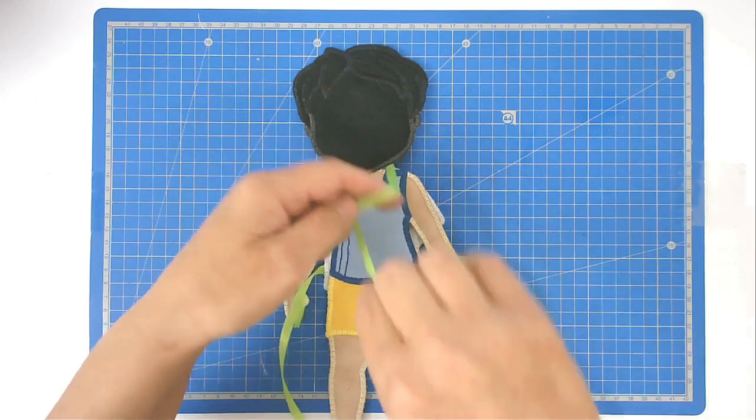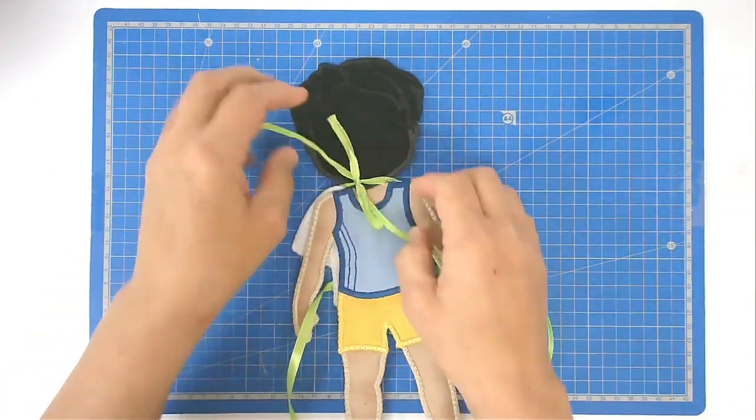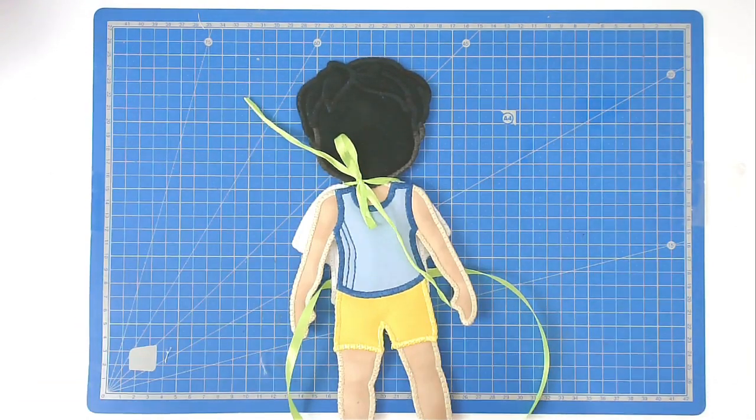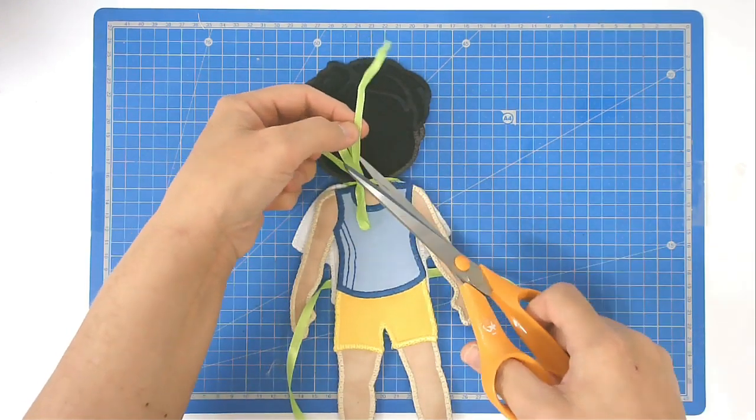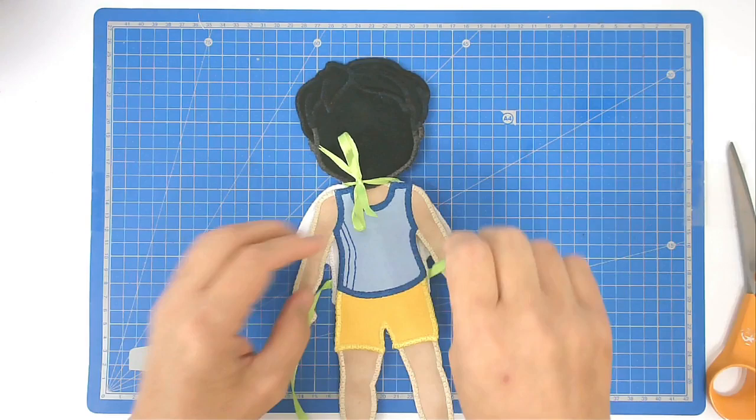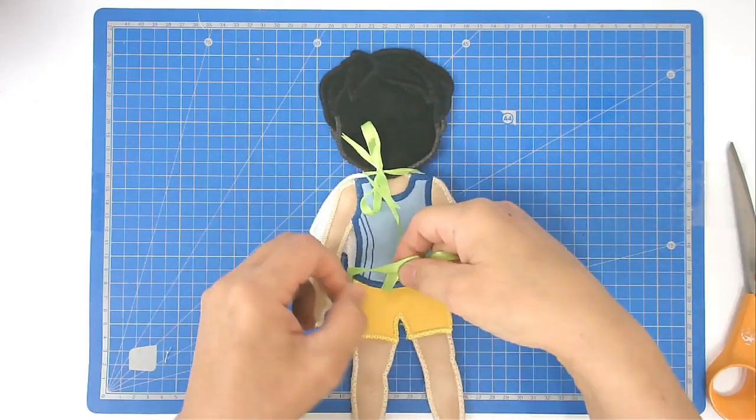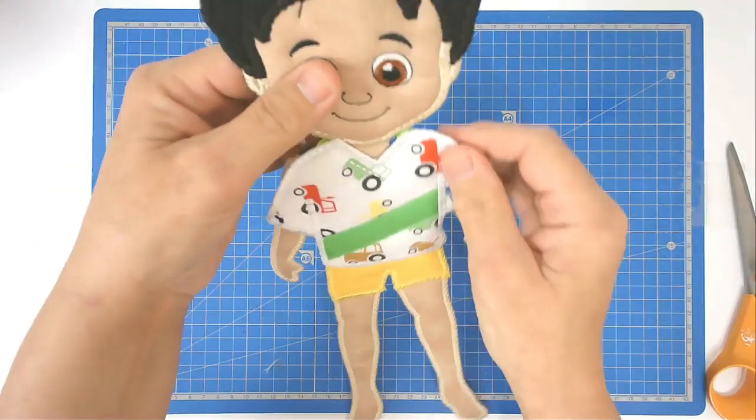I'm now going to tie my ribbons up and trim them to size. Same for the waist. And there's Tony's clothing being held nice and firmly in place.